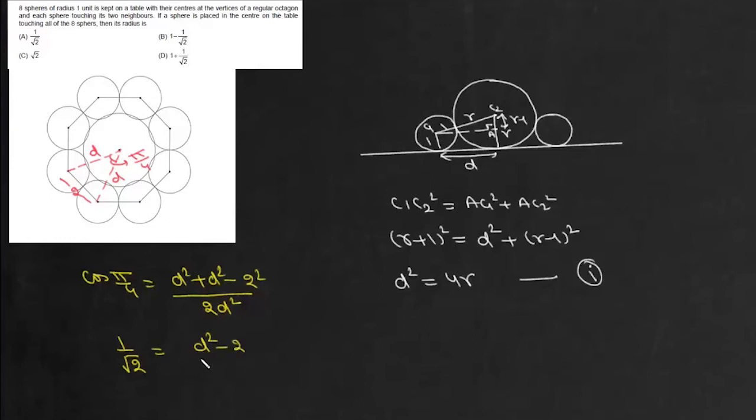Simplifying, we get (D² - 2)/D² = 1/√2, which gives us 1 - 2/D² = 1/√2. Therefore, D² = 2√2/(√2 - 1).